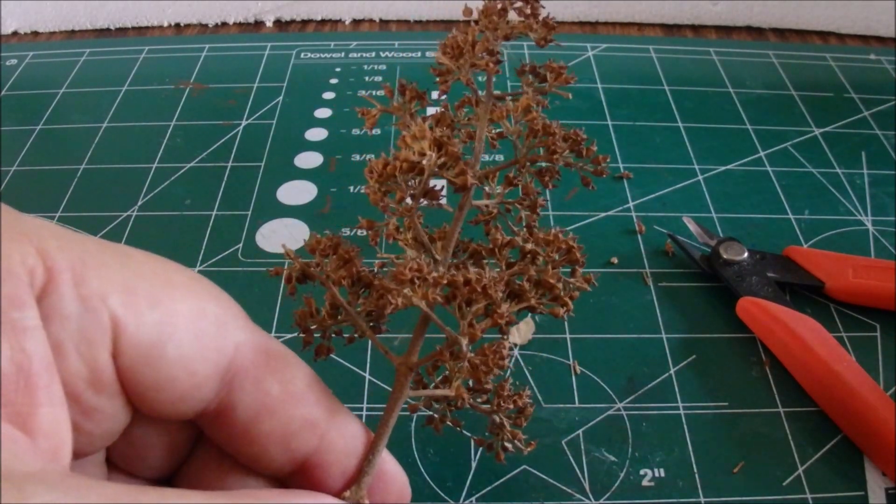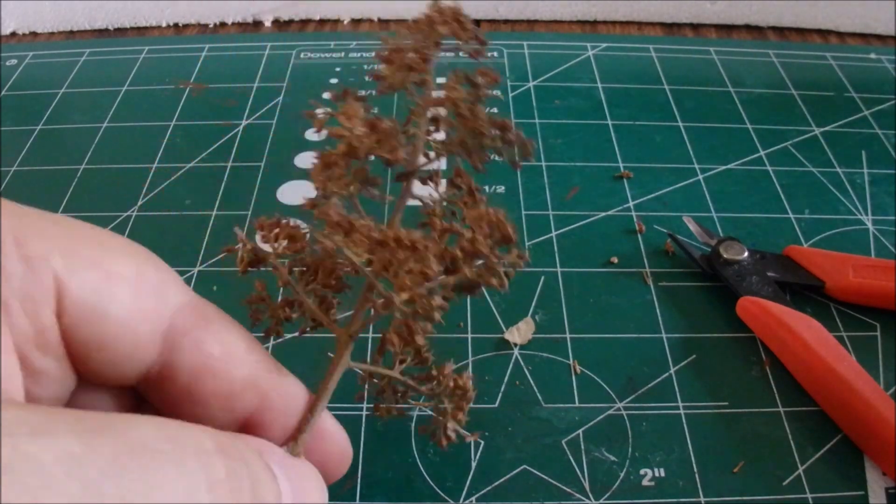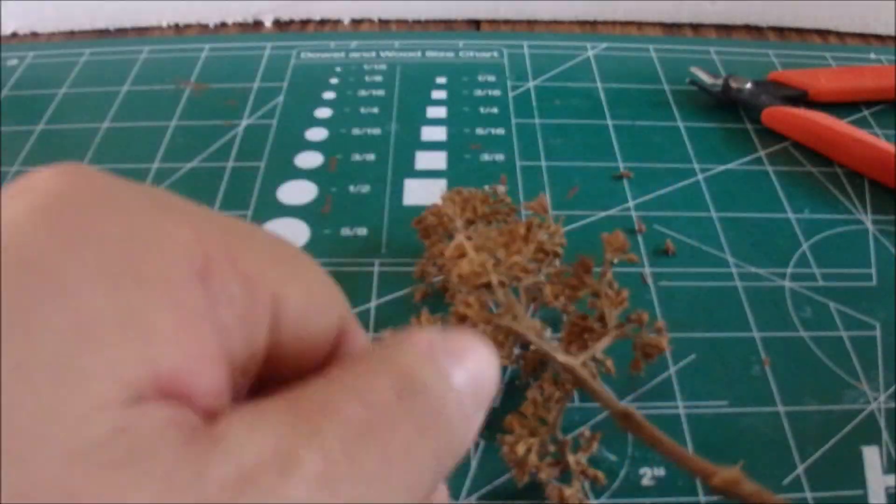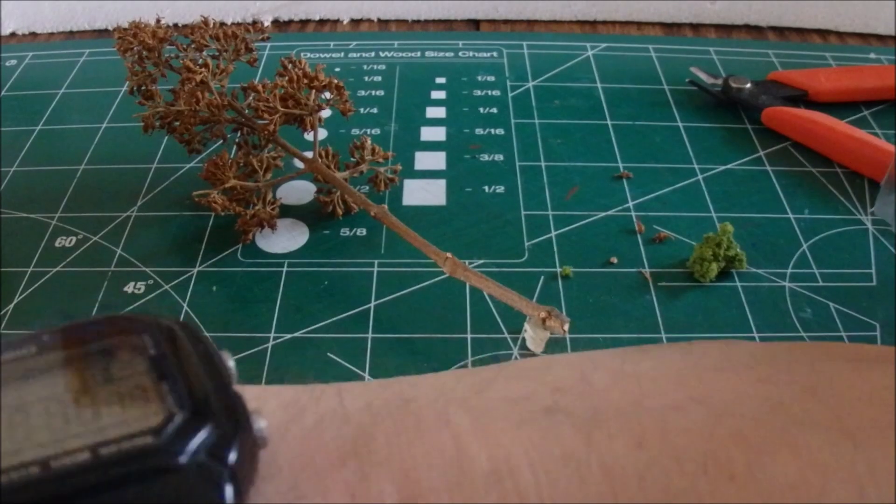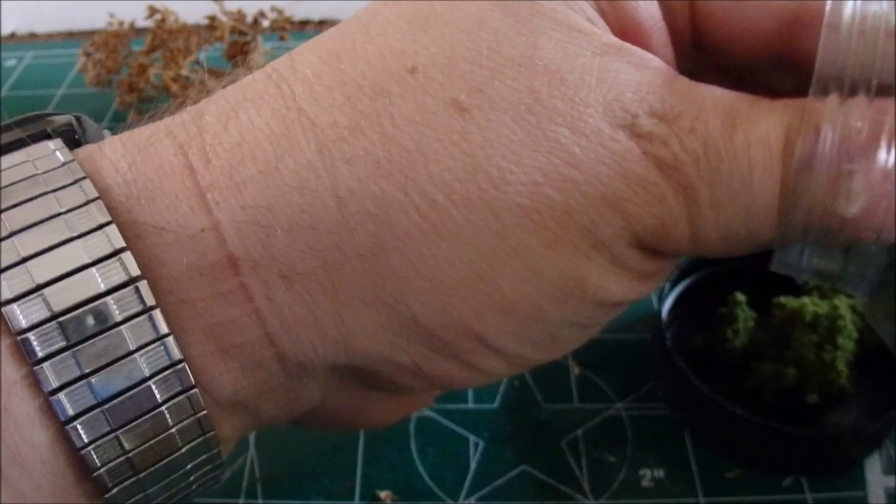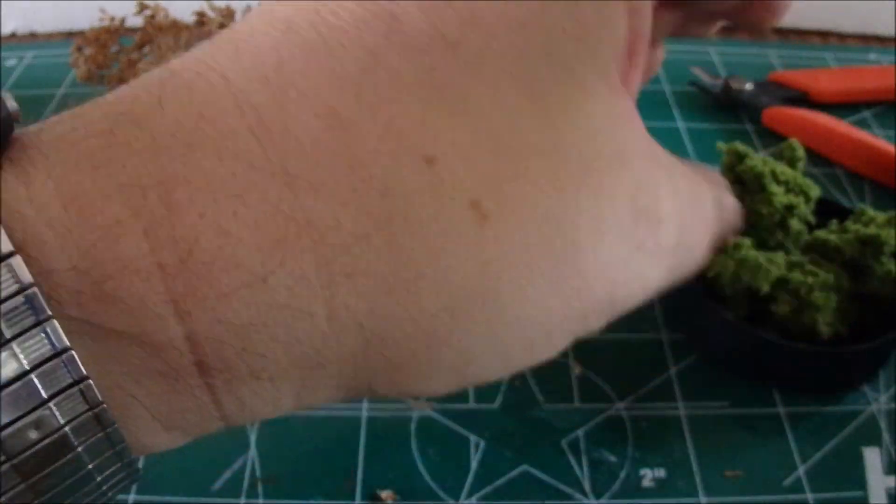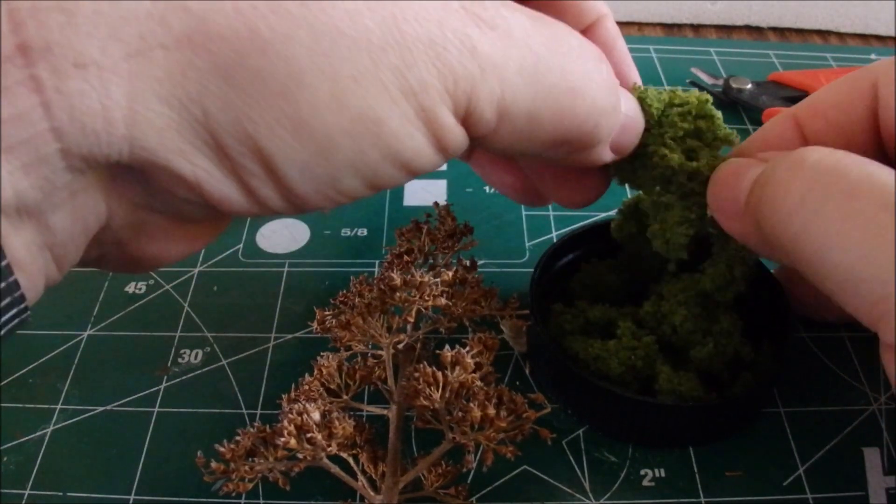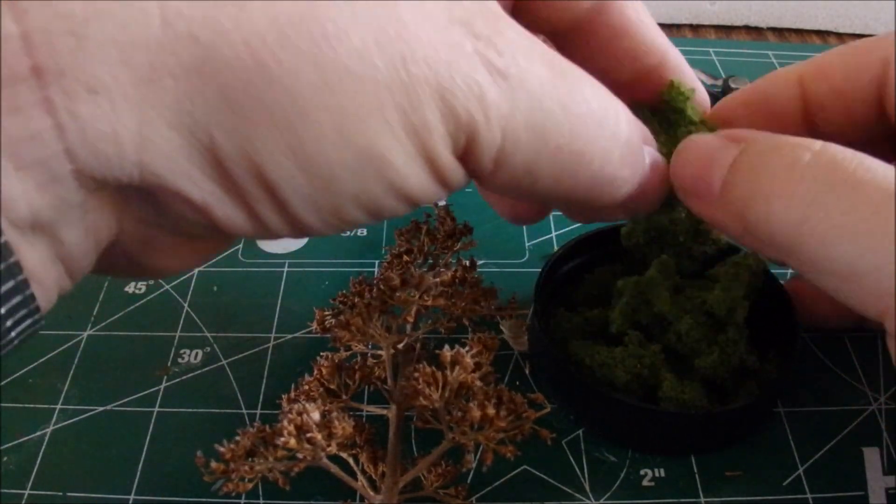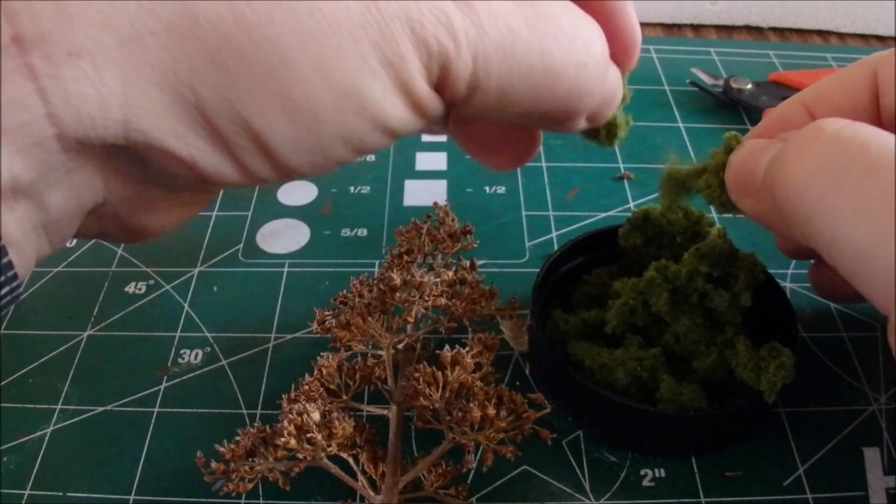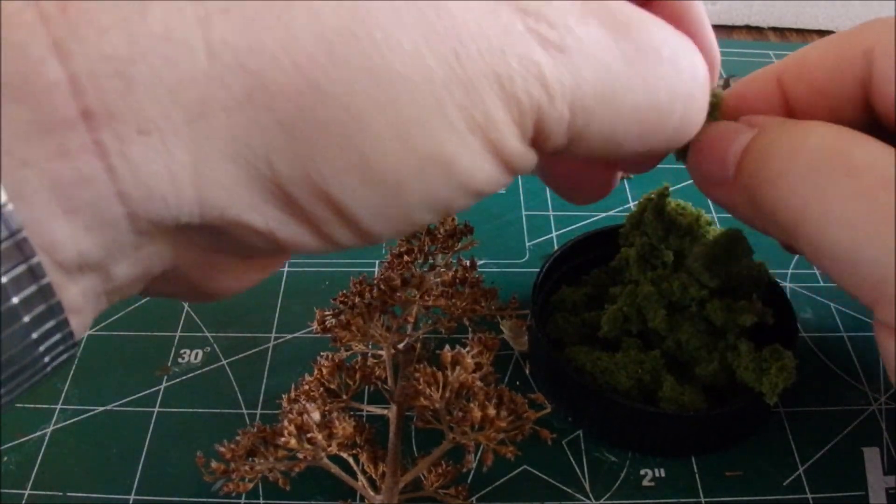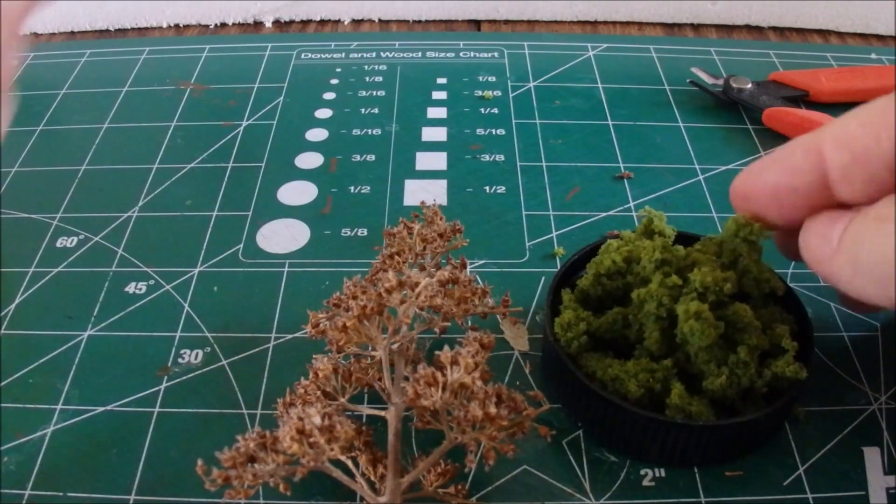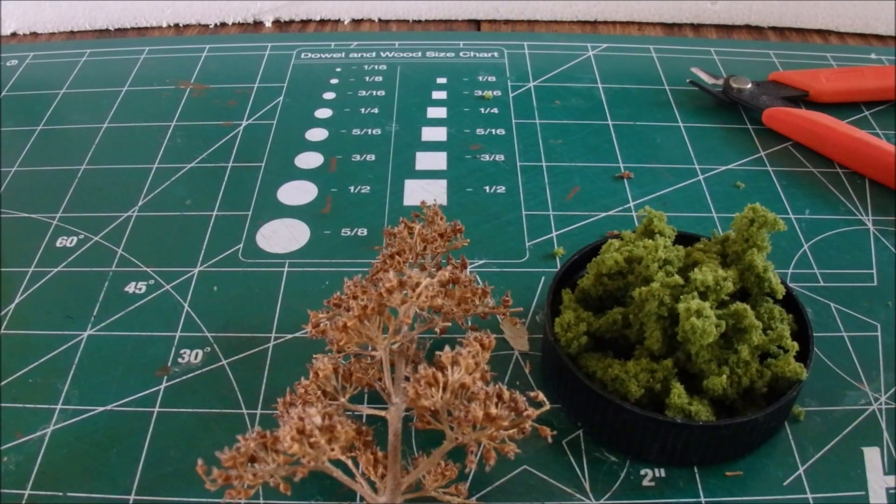I start with a couple of different methods you could use for this. One thing I like as an alternative to spray adhesive, which can get kind of messy, is to just use some clump foliage and tear that up into smaller pieces. Then just grab some plain old white glue and start gluing them to the tree. It works out pretty well.